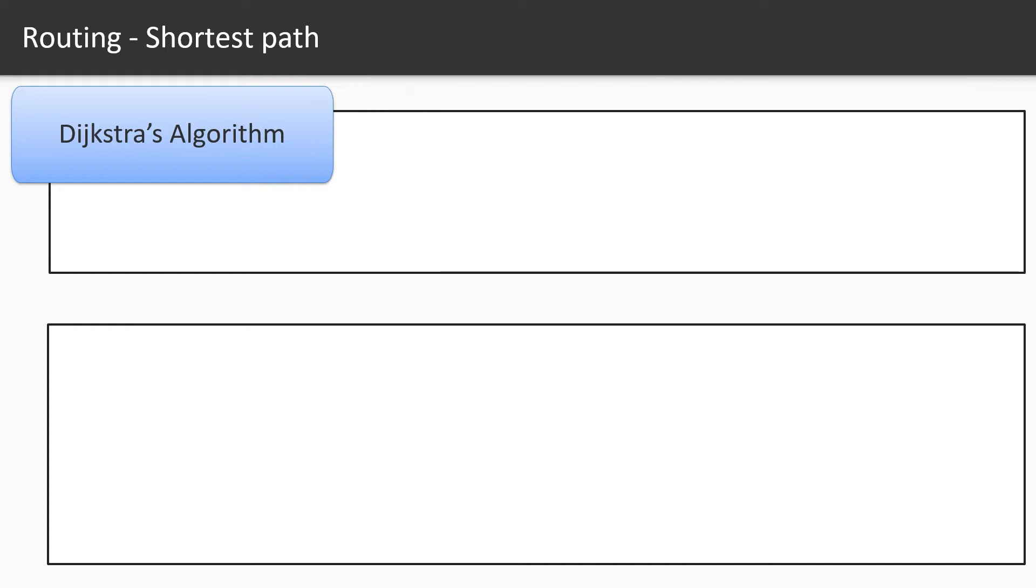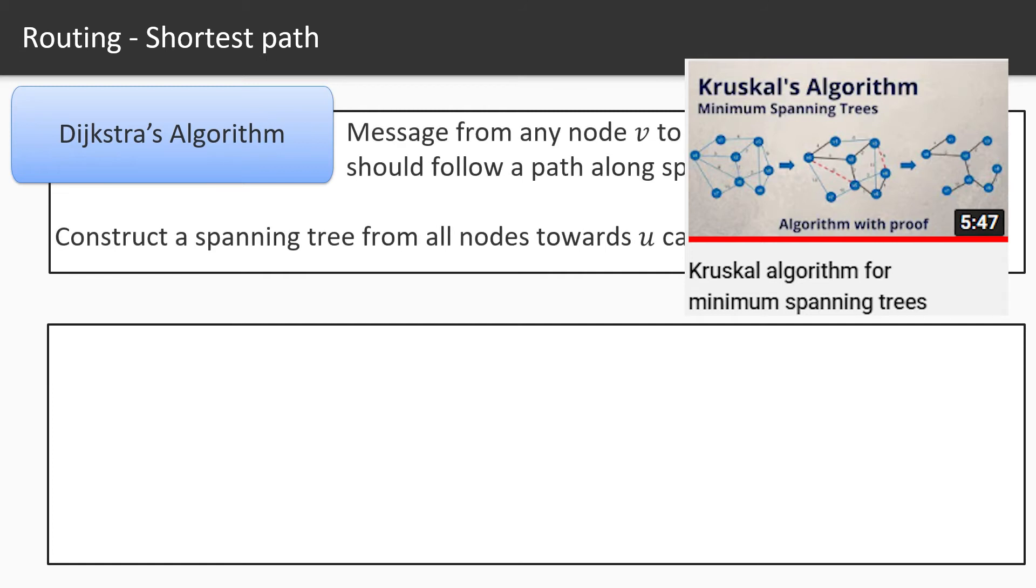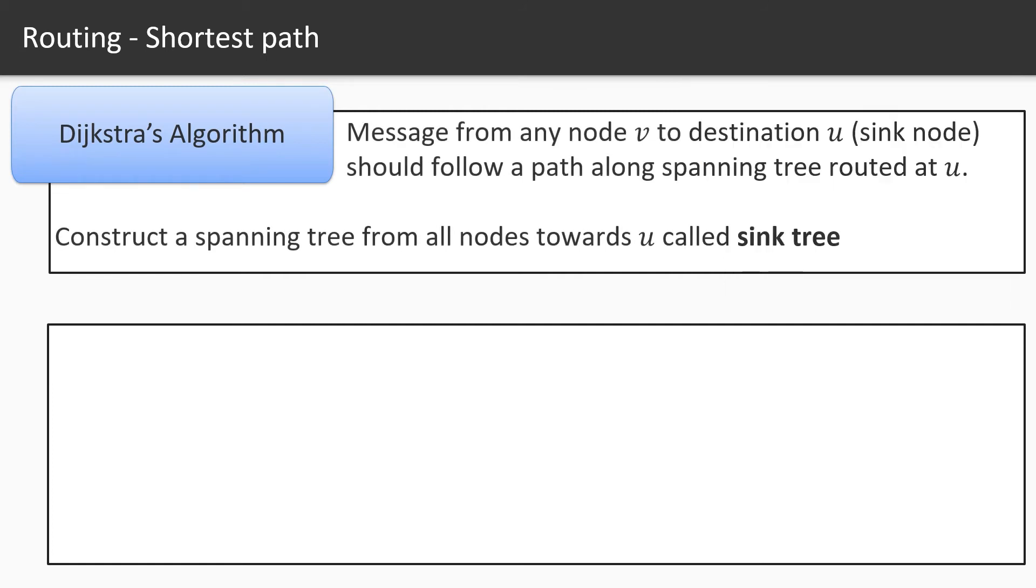We have already studied about trees and spanning trees so the definition for this algorithm will be as follows. Message from any node v to destination node u, also known as sink node or the root node, should follow a path along the spanning tree rooted at the sink node. So this will allow us to construct a spanning tree from all the nodes towards the sink node. That will eventually make a sink tree.